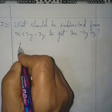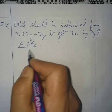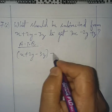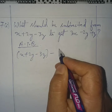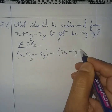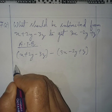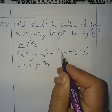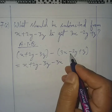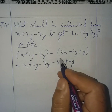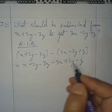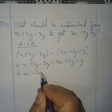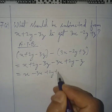According to the question, x plus 2y minus 3z. Let us do it by horizontal method, minus 3x minus 2y plus z. Now opening the bracket: x plus 2y minus 3z, minus into plus is minus 3x, minus into minus is plus 2y, minus into plus is minus z.